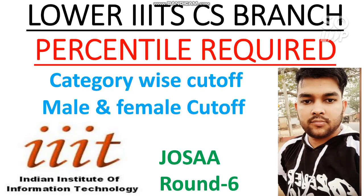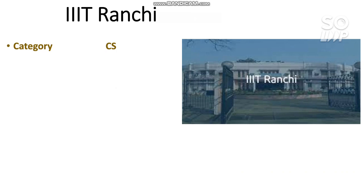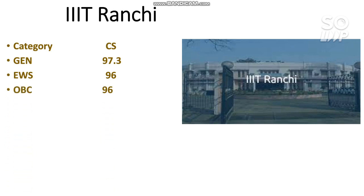Let's start the video. Here is the first IIIT - the category-wise cutoff for CS. You need to score 97.3 percentile if you are from General, 96 percentile for EWS, 96 for OBC, 77 for SC, and 76 for ST. If you want to know the category rank based on this percentile, you can watch my video on percentile versus category rank to get your OBC, SC, ST, or EWS rank.